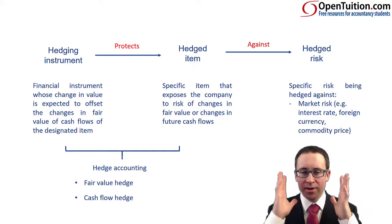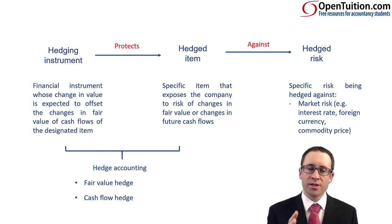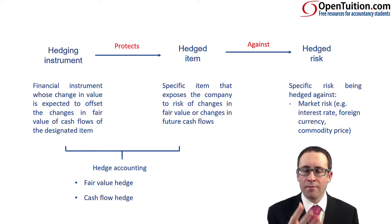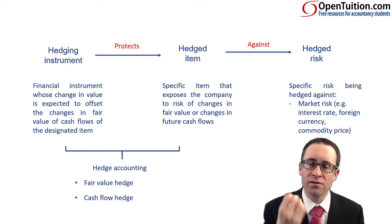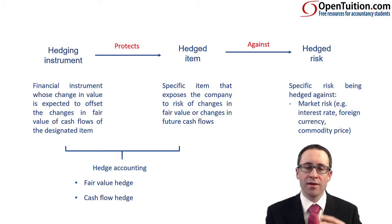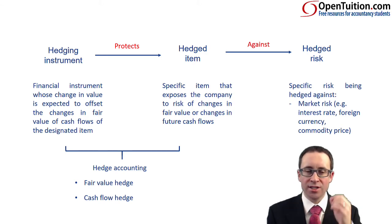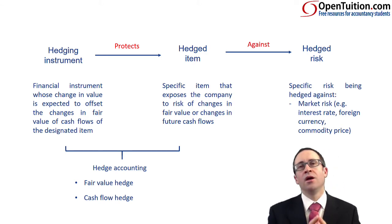In the middle you have the hedged item — the specific item within the financial statement that you are looking to protect the value of, whether that's its fair value: the value of your shares, the value of your debt at market value, or any changes in future cash flows. These give rise to variability and therefore risk. That hedged item needs to be protected, and the way we do that is via a hedging instrument — usually a derivative contract. The hedging instrument's value will offset the changes in value of those cash flows or the fair value of the item.